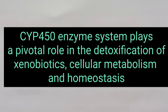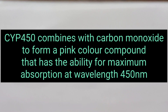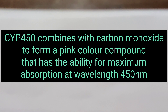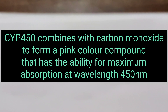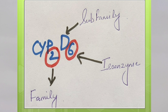Cytochrome P450 combines with carbon monoxide to form a pink color compound which has the ability for maximum absorption at wavelength 450 nm. Therefore, it is named as cytochrome P450. Cytochrome P450 is classified into families, subfamilies and isoenzymes.